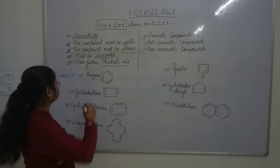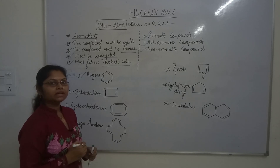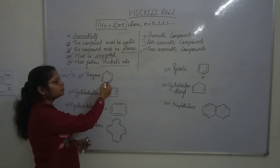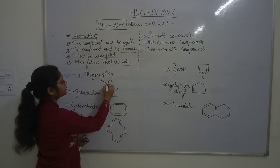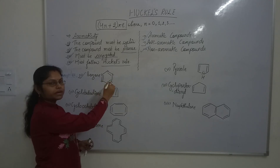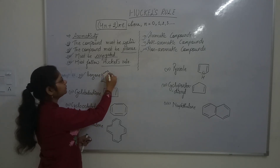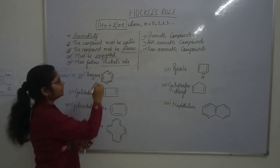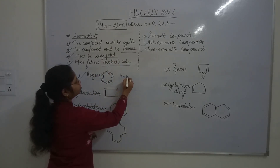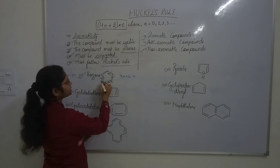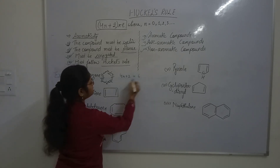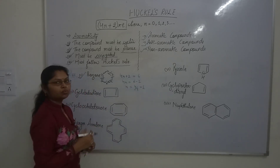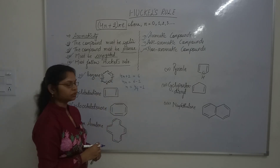Taking the example of benzene — benzene is a well-known aromatic compound, but let us verify all the rules. It is cyclic, with all carbon atoms arranged in a ring. It is planar because all carbons are sp2 hybridized. It is conjugated with alternating single and double bonds. Checking Hückel's rule: there are three double bonds, meaning 6 pi electrons. For (4n + 2) = 6, we get n = 1, which is a positive integer, so benzene is an aromatic compound.